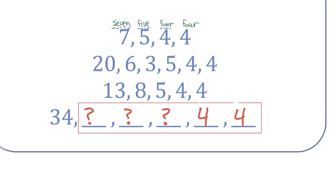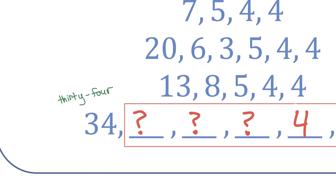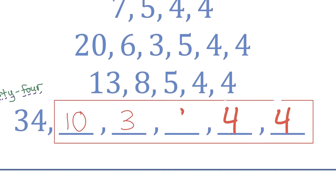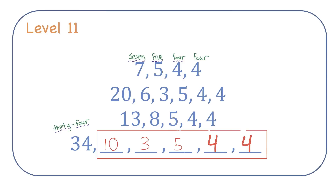So let's fill in the missing values for the fourth sequence. Spelling out 34: T-H-I-R-T-Y-F-O-U-R — that's 10 letters, so the next number in the sequence is 10. Then 10 is spelled with three letters, three is spelled with five letters, five is spelled with four letters, and four is spelled with four letters. Let me know in the comments how far you got, which ones you got stuck on, and what series you want to see next.